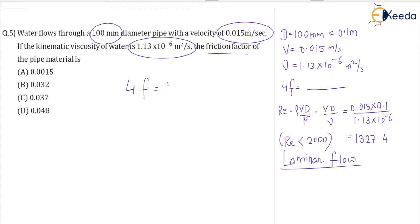For laminar flow, 4f = 16/Re, so 64/Re. That's 64 divided by 1327.4, which equals 0.048. Friction factor is always in the order of 0.0 something.